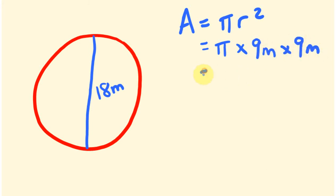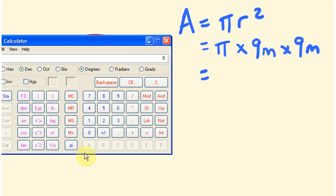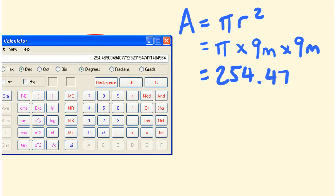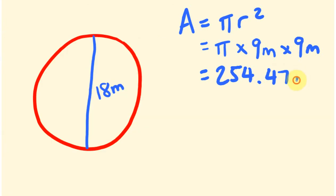So the area equals pi times 9 times 9. Let's get the calculator up. Pi times 9 times 9 equals 254.47. Let me double check that — 254.47, correct. And that's in meters squared.